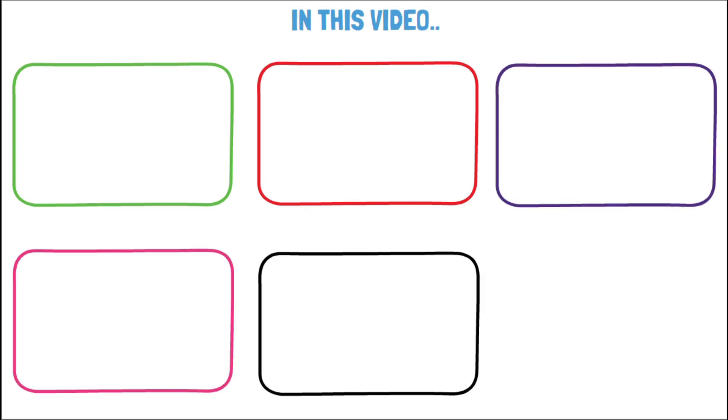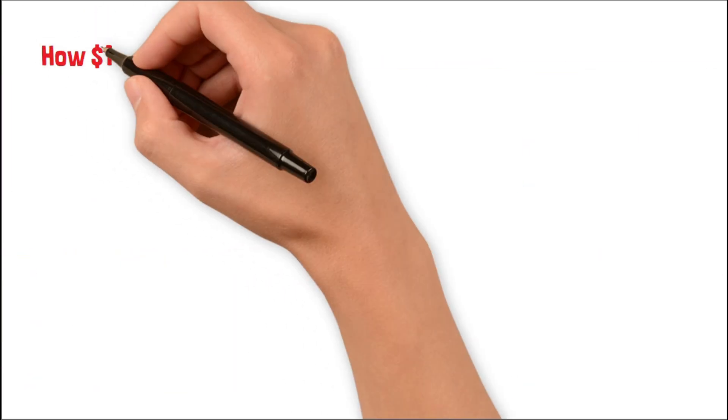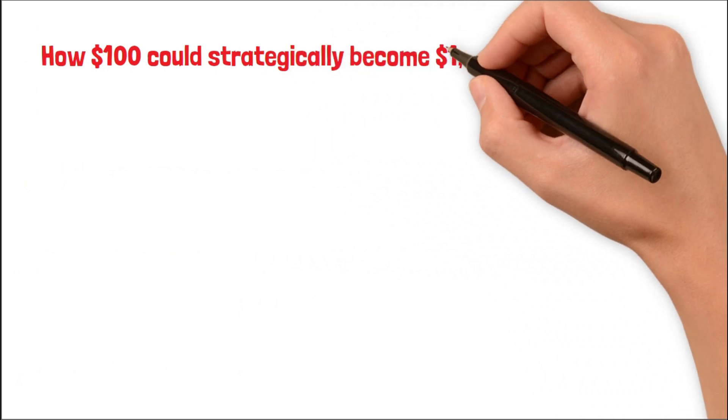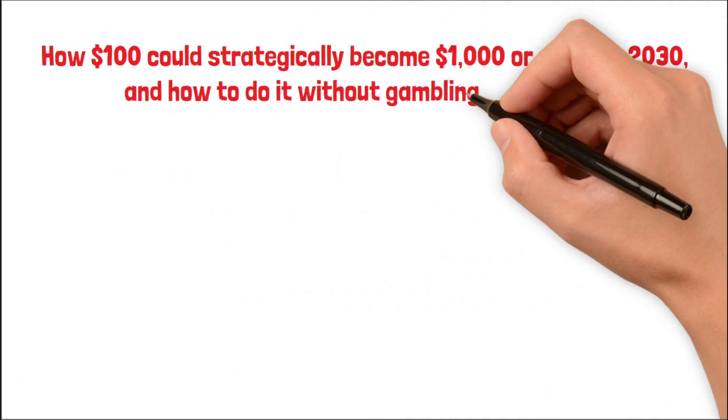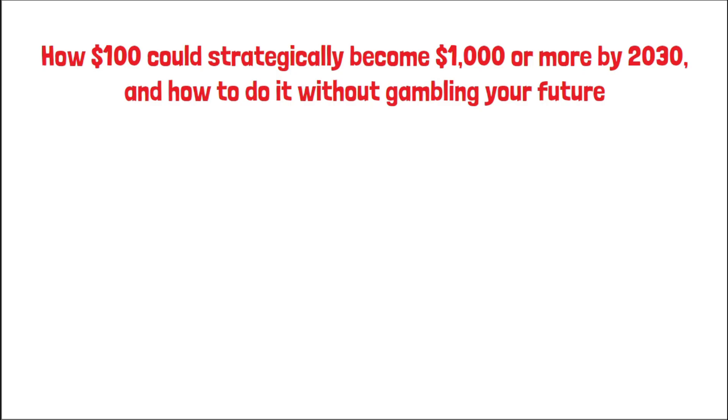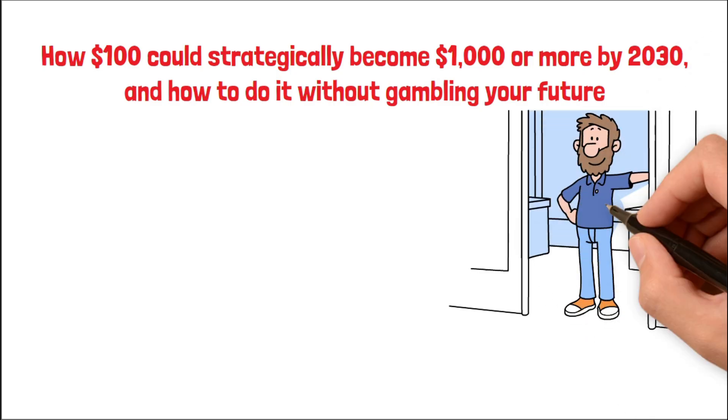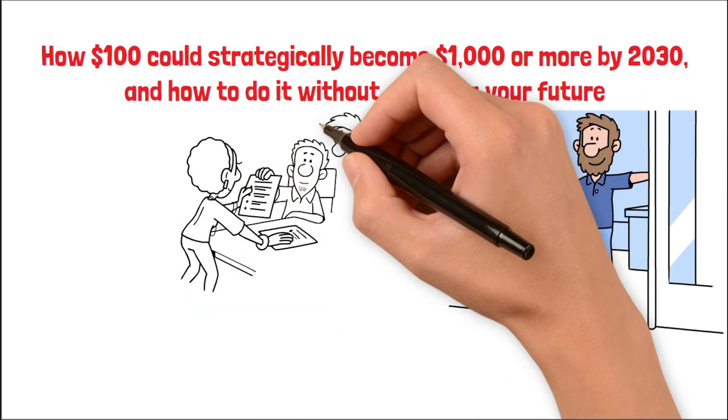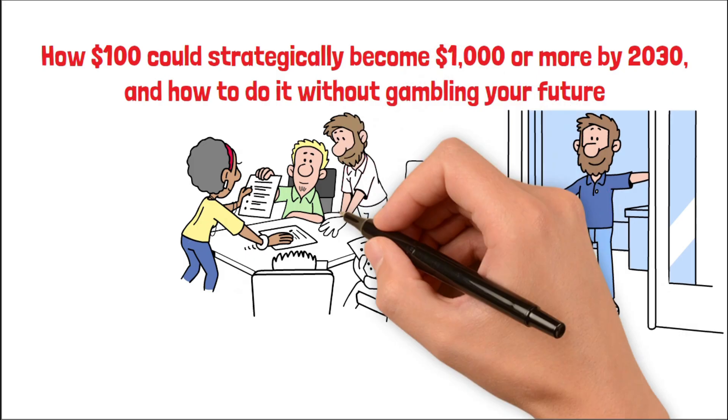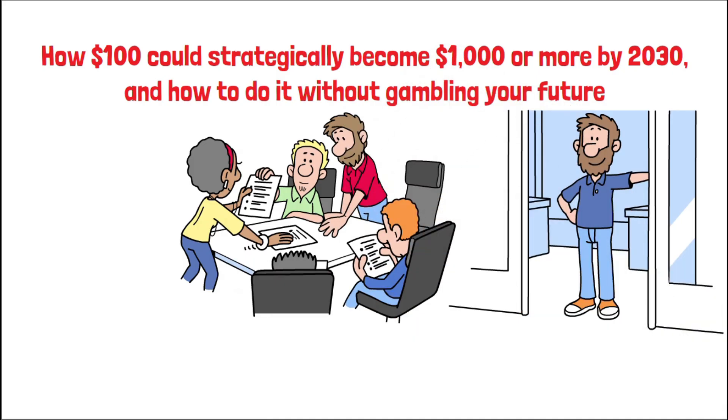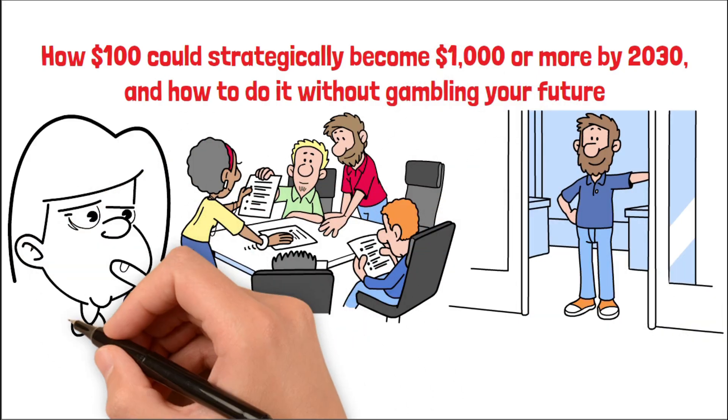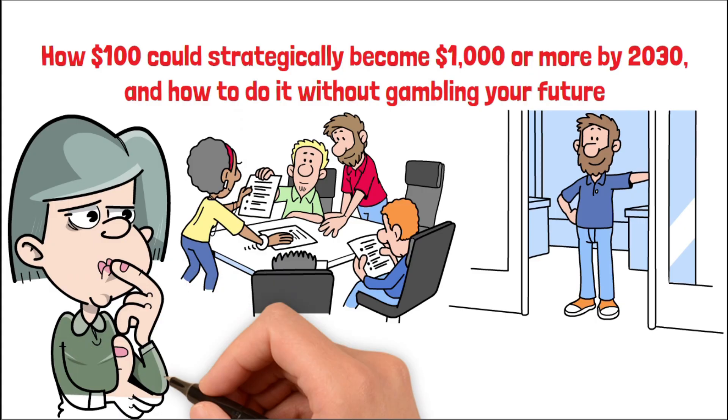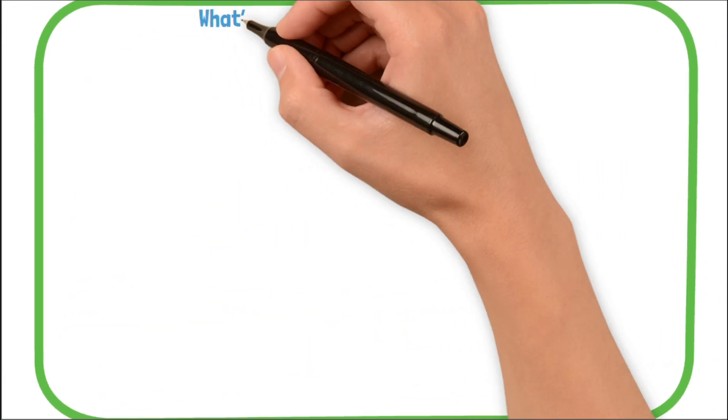So in this video, I'm not selling dreams. I'm showing you data. We'll map out exactly how this trillion-dollar sector breaks down, how $100 could strategically become $1,000 or more by 2030, and how to do it without gambling your future. This is the quiet window before the boom. The same kind of window early investors had before cloud, before AI, before the internet itself. And by the end of this, you'll know whether you're ready to be early, or whether you'll be watching it from the sidelines again. Let's get into it.